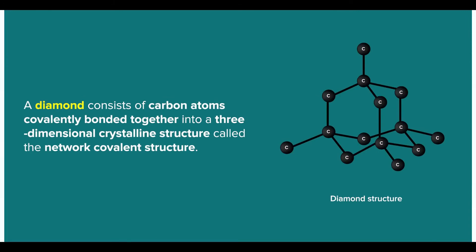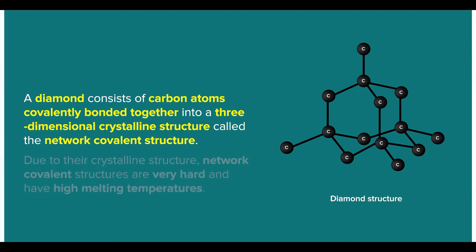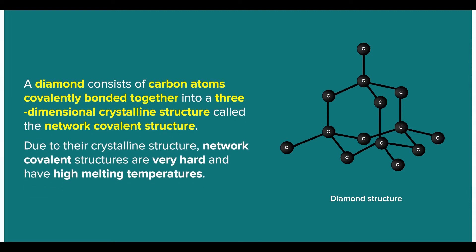A diamond consists of carbon atoms covalently bonded together into a three-dimensional crystalline structure called the network covalent structure. Due to their crystalline structure, network covalent structures are very hard and have high melting temperatures.